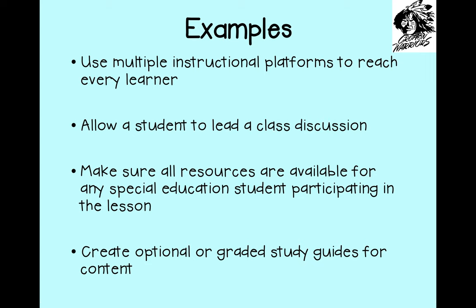Use multiple instructional platforms to reach every learner — that could be a PowerPoint, reading from a textbook, looking at historical documents, getting with a partner, or exchanging homework to make sure everyone's doing it correctly. Allow a student to lead a class discussion. Make sure all resources are available for any special education student participating in the lesson. For instance, if you have an activity that requires cutting with scissors and a student doesn't have the ability to use scissors, you need to have those parts pre-cut for that student or assign a willing partner to do those steps so that student can still participate. If you're not creating those accommodations, then technically that student is not being included and inclusivity is completely gone.